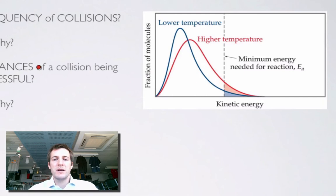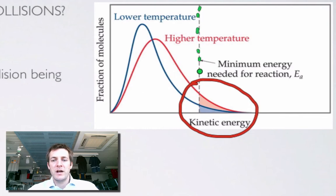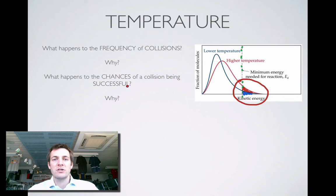What happens to the chances of a collision being successful? This is shown by the shaded area of the graph. If we mark on the graph the minimum energy needed for a reaction — the activation energy — we can see that at the lower (blue) temperature, a certain proportion of particles have enough energy to react. At the higher temperature, those original particles plus additional ones now exceed the activation energy.